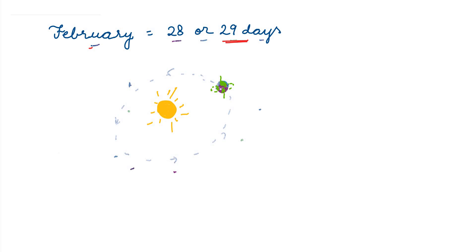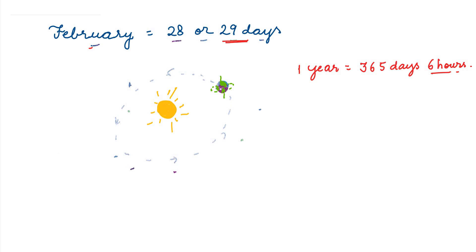A year is the period of movement of the Earth around the sun. The exact time of the movement of Earth around the sun is 365 days and 6 hours. One year means how many days to complete the time of our orbit — 365 days and 6 hours. For the sake of convenience, the year is rounded off to 365 days.